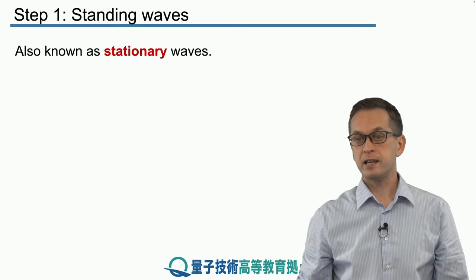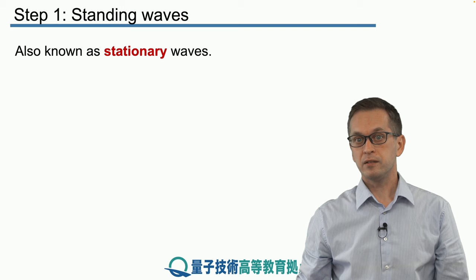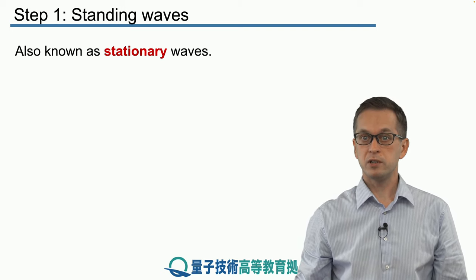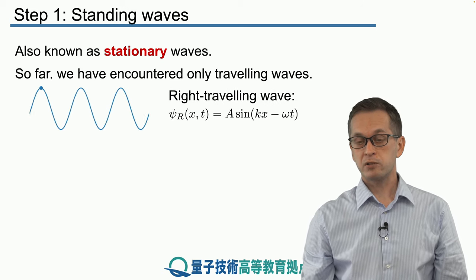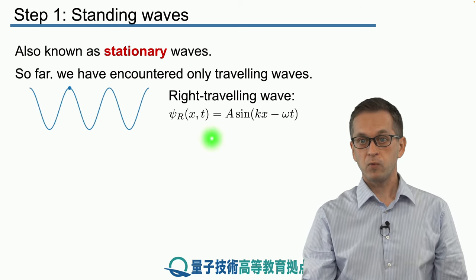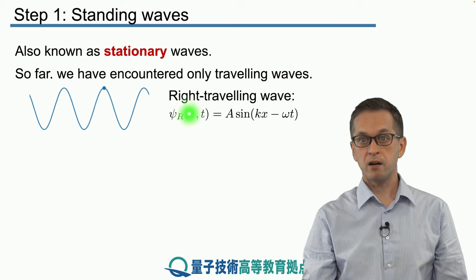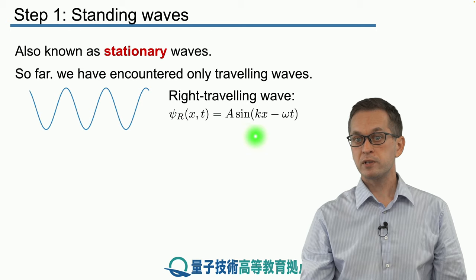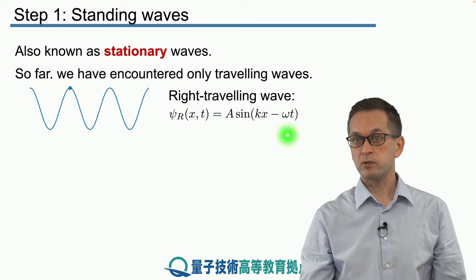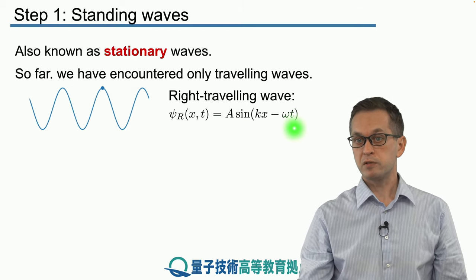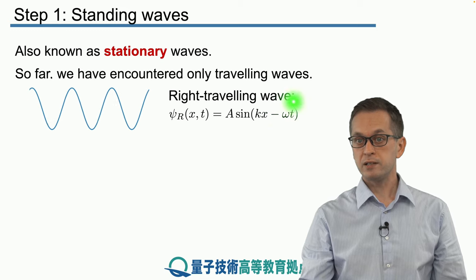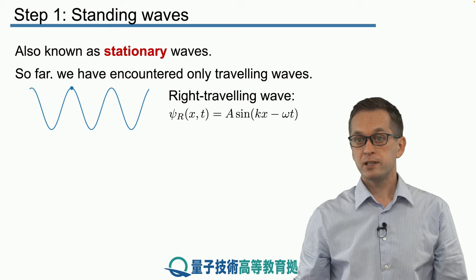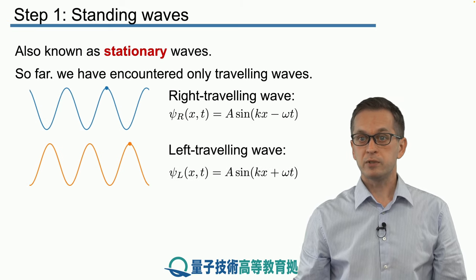You are familiar with standing waves from probably your high school studies. Here we will just cover them briefly and do a little bit of math to show you how we can produce standing waves. Standing waves are also known as stationary waves. So far we have been considering only travelling waves, right travelling waves described by a wave function ψ(x,t). For example, if it's a simple harmonic like we're considering now, it's given by this form where the negative in front of omega t signified that the wave was right travelling. If we change that sign to positive, then the wave becomes left travelling.